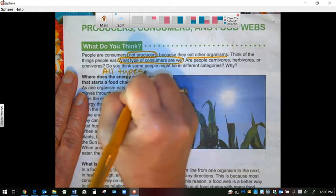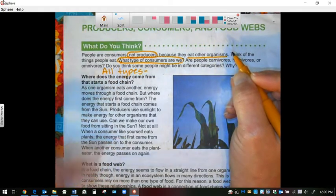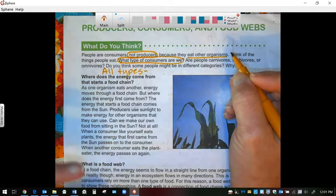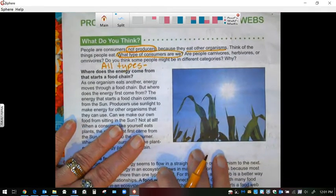Actually all types. Because everybody eats food. So they can eat either plants or animals or they eat both. So people are all types of consumers.